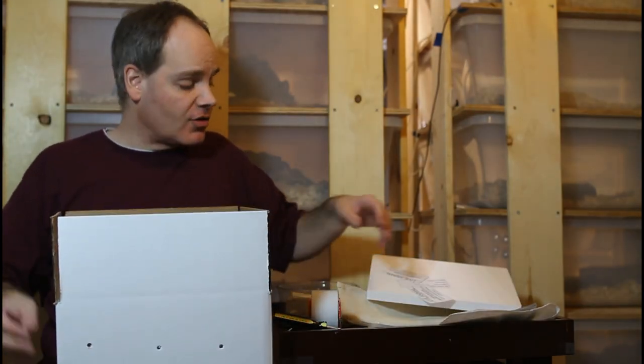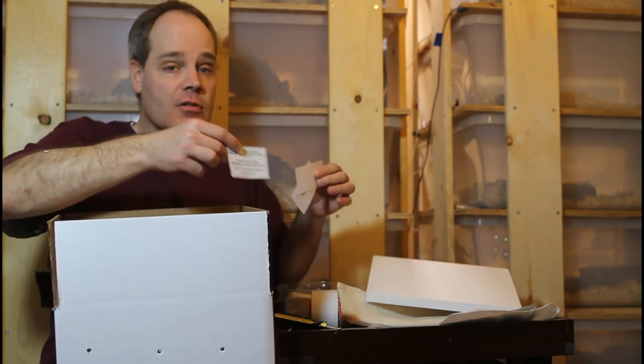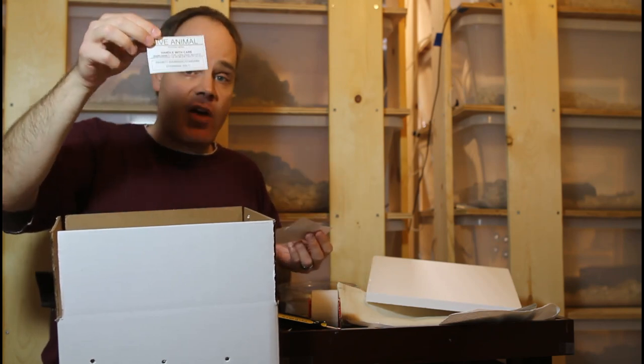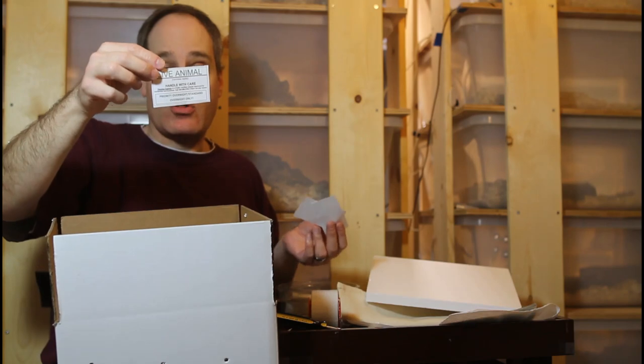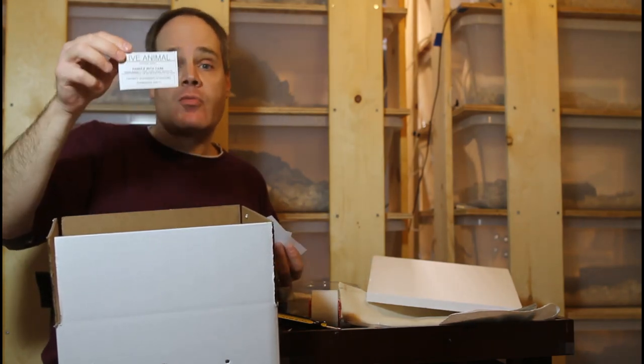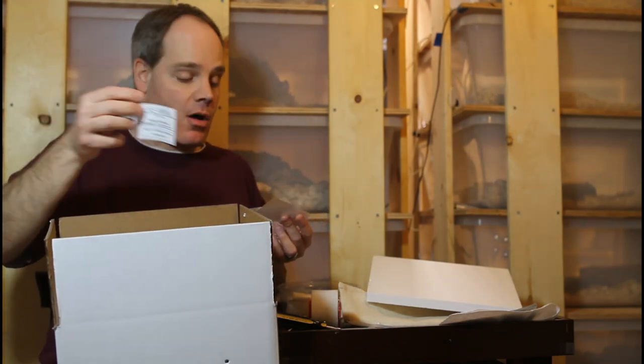So before you ship your box, it's important to attach a couple little signs to the box. And these you get at Reptiles Express with your shipping label. The first is just a live animal sticker. It says handle with care, priority overnight shipping only. And then it's got the phone number of Reptiles Express in case that anything should happen to go wrong. They can call that number.